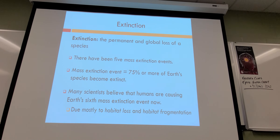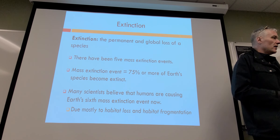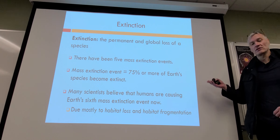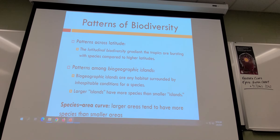Extinction is another key term. Extinctions can happen large scale or small scale — there have been a number of mass extinction events. For example, the dodo bird went extinct because humans hunted it until it was no more. There's now a company that wants to bring them back because we have their genetics since they died out relatively recently — maybe a similar experiment to Jurassic Park.